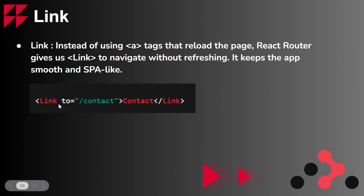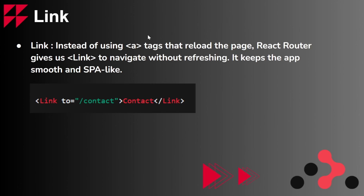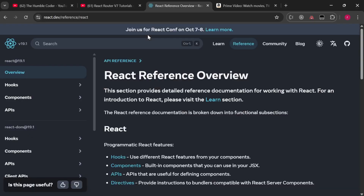The syntax of the Link component: your text goes in between the tags, and you specify the 'to' attribute with the path you want the URL to update to. For example, when I click on Contact, my URL should update to /contact. Those are the major concepts — I hope it's clear now.